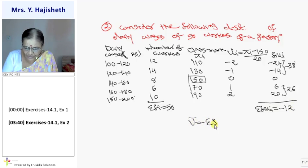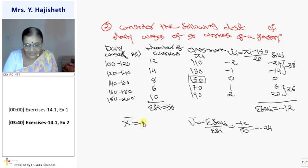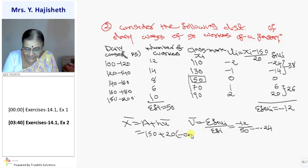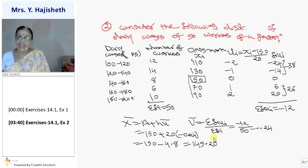Now you know the formula. Find out the U bar first. U bar is sigma FI UI upon sigma FI. So it is minus 12 by 50. So it is 2 multiplied by minus 24 by 100. So it is minus 0.24 decimal mein aaya. Now X bar is A plus H U bar. So A ki jagah I write 150. H ki jagah I write 20. U bar ki jagah I write minus 0.24. So 0.24 into 20 is minus 4.8. So my answer is 145.20. That is the average wages of the worker of a factory.